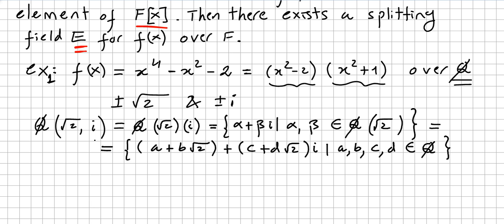What is a splitting field for f(x) over the rationals? It will be this field: Q(√2, i) = {α + βi | α, β ∈ Q(√2)} such that α and β are in this field Q(√2).